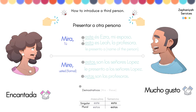For example: 'mira, este es Ezra, mi esposo' — this is Ezra, my husband. Or 'esta es Lea, la profesora.' Or 'le presento a' followed by the name. If it's a bit more formal: 'mire' — 'estos son los señores López, por ejemplo' — or 'le presento a los señores López.' Or 'estas son las profesoras.'